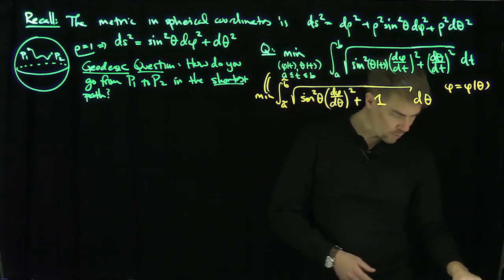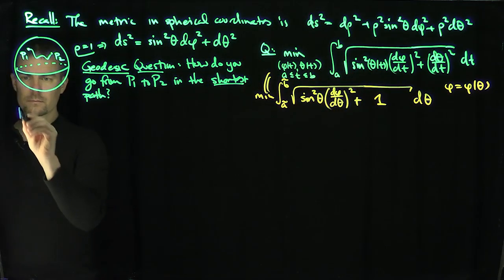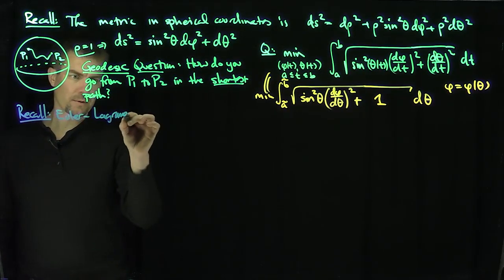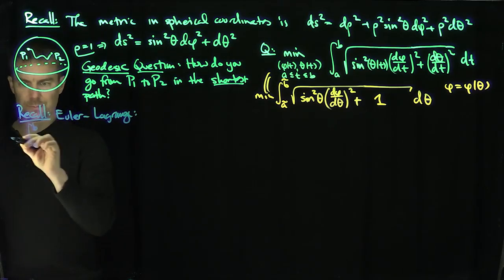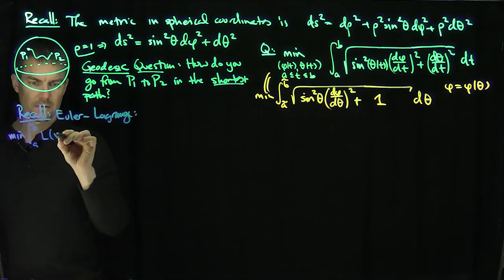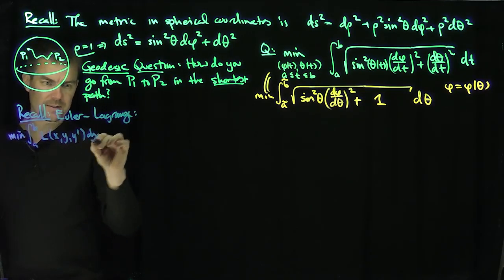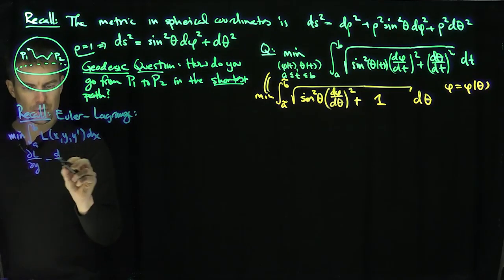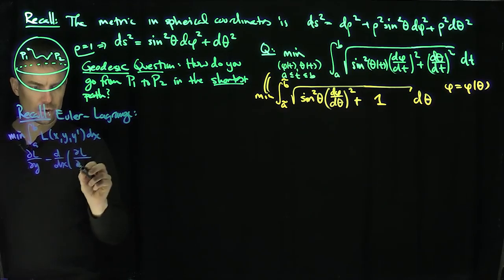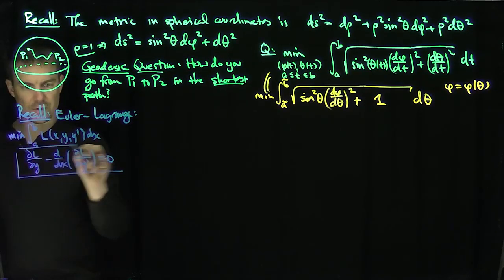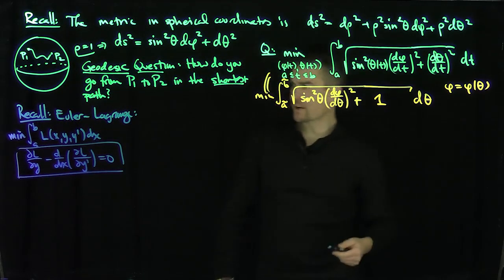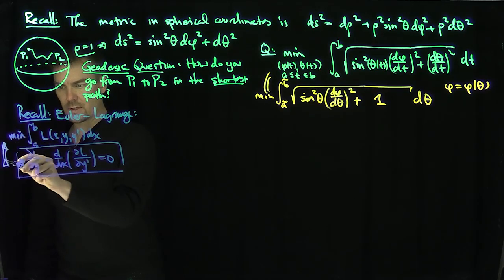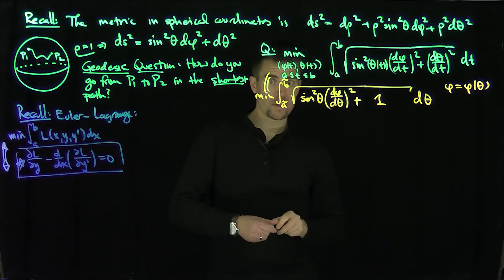That's our integrand. Now let's recall the Euler-Lagrange framework — we've proven this in previous videos. The Euler-Lagrange equations say: if you want to minimize ∫L(x, y, y') dx, then the following must be satisfied: ∂L/∂y − (d/dx)(∂L/∂y') = 0. If I can solve this differential equation, I will find the minimum. These are equivalent conditions.